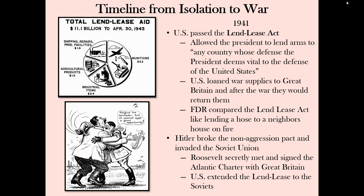Frustrated by his inability to defeat Britain, Hitler turned his attention to the Soviet Union. In 1941, he launched Operation Barbarossa, an attack on the Soviet Union in violation of the pact he had signed just two years earlier. The United States responded by forming an alliance with the communist Soviet Union and offering them aid through the Lend-Lease Act — the enemy of my enemy is my friend. The United States was now supplying war materials to enemies on both sides of Adolf Hitler, who now found himself fighting a two-front war.